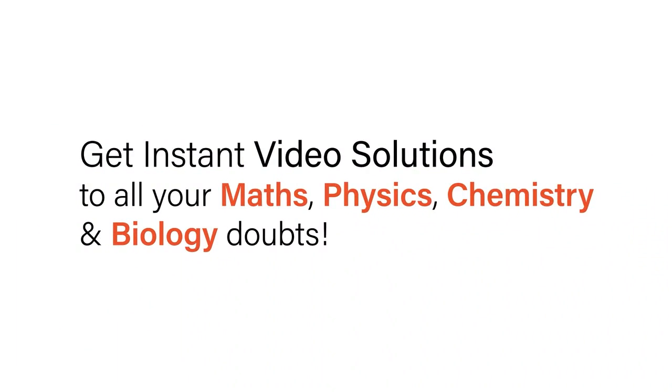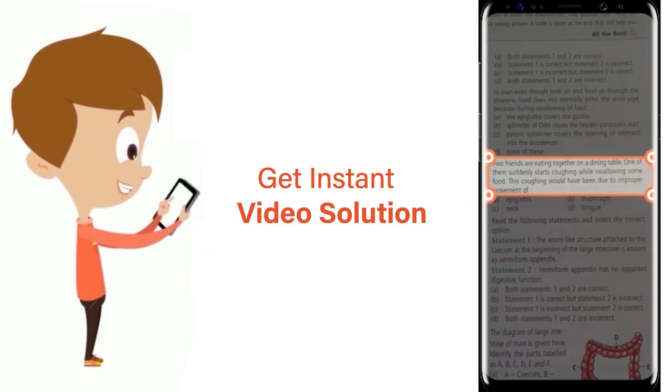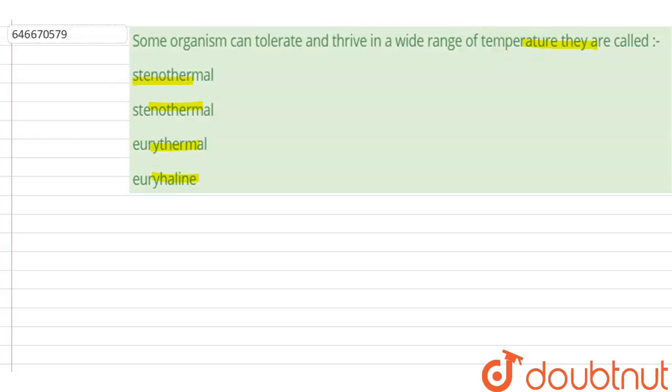With Doubtnet, get instant video solutions to all your maths, physics, chemistry, and biology doubts. Just click the image of the question, crop the question, and get instant video solution. Download Doubtnet app today. Thermal, euryhaline—so the correct option is stenothermal.